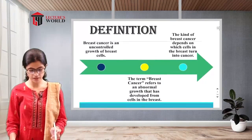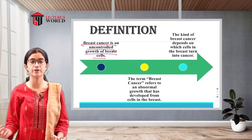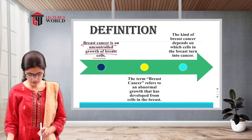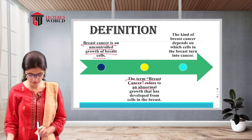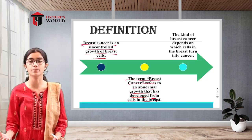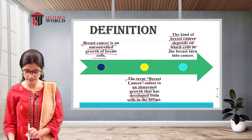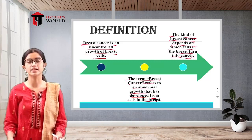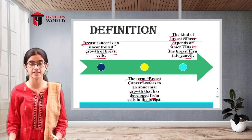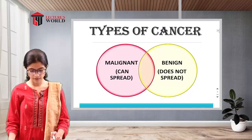The definition: breast cancer is an uncontrolled growth of breast cells. The term breast cancer refers to abnormal growth that has developed from cells in the breast. The kind of breast cancer depends on which cells in the breast turn into cancer — whether it is ductal carcinoma or lobular carcinoma, depending on the region where the abnormality is present.